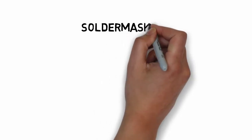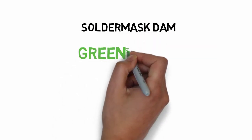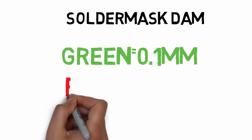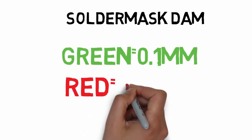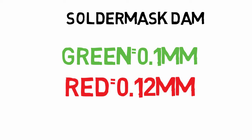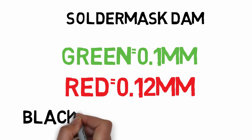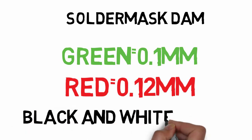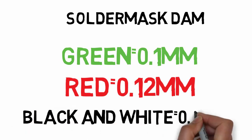The green solder mask dam is 0.1 mm. The red color solder mask dam is 0.12 mm. The blue solder mask dam is 0.15 mm. The solder mask dam is the distance between two components.